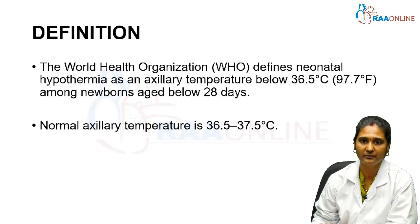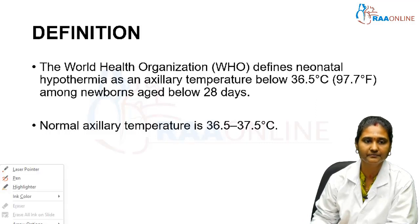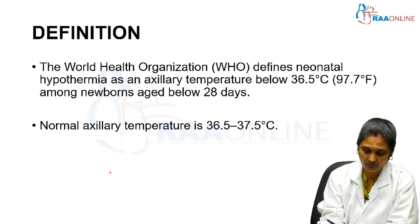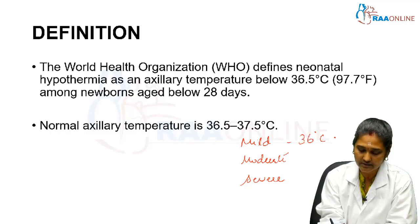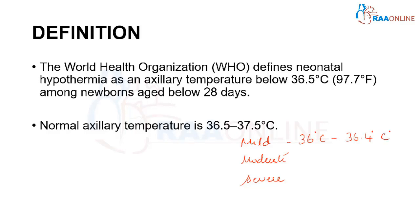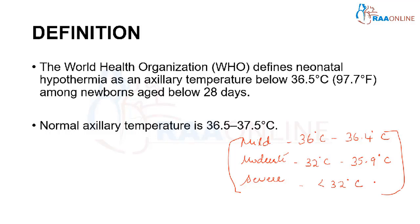The normal axillary temperature is between 36.5 and 37.5 degrees centigrade. Hypothermia is classified into three stages: mild hypothermia is 36.0–36.4°C; moderate hypothermia is 32.0–35.9°C; and severe hypothermia is when the core body temperature goes below 32 degrees centigrade.